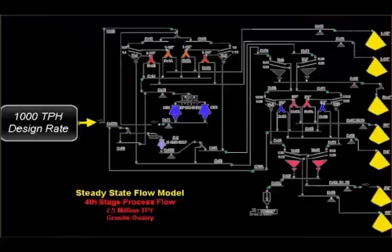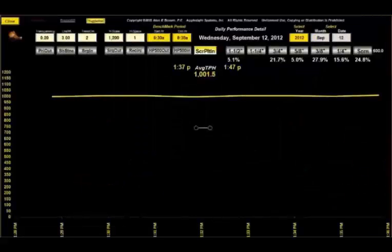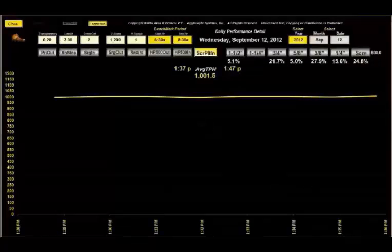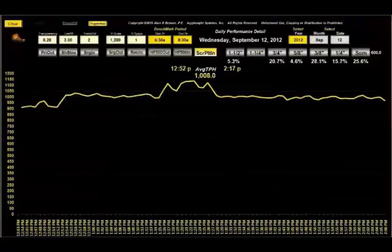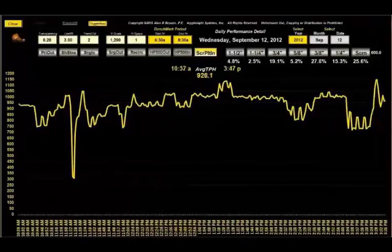This flow model shows the finished production segment of a currently operating 1,000 ton per hour rated plant. This is an image from the quarry vision real-time reporting system displaying actual production from the plant just shown in the flow model. This 10-minute snapshot shows what appears to be a steady state process, capable of achieving its design rate of 1,000 tons per hour.